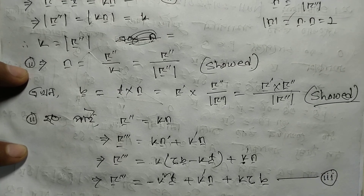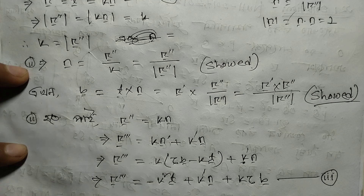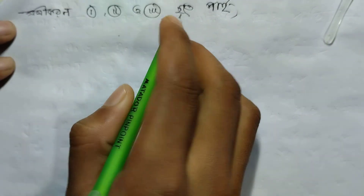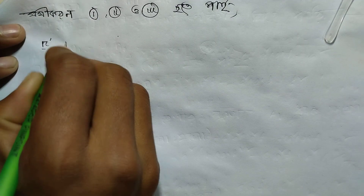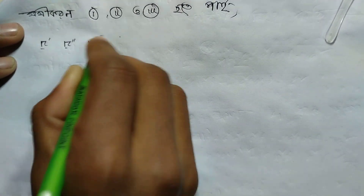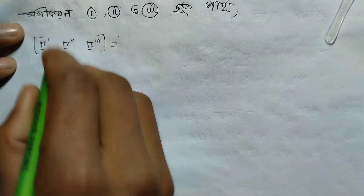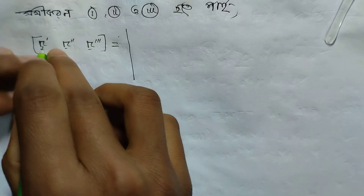Now we arrange these — taking r prime, r double prime, r triple prime — in a determinant (scalar triple product). We take three rows: row 1 from r prime, row 2 from r double prime, row 3 from r triple prime — and evaluate the bracket to find the value.